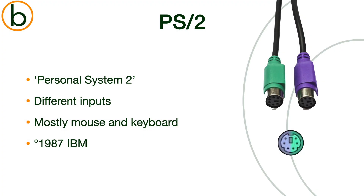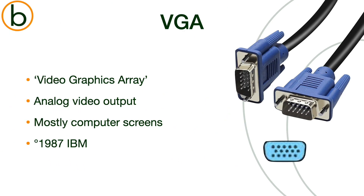One of the classics is the PS/2 connector, which stands for Personal System 2. This connector, introduced by IBM in 1987, is commonly used for different inputs, and most typically to connect keyboards and mice to the CPU. Moving on, we have the VGA connector, or Video Graphics Array, developed by IBM in 1987.